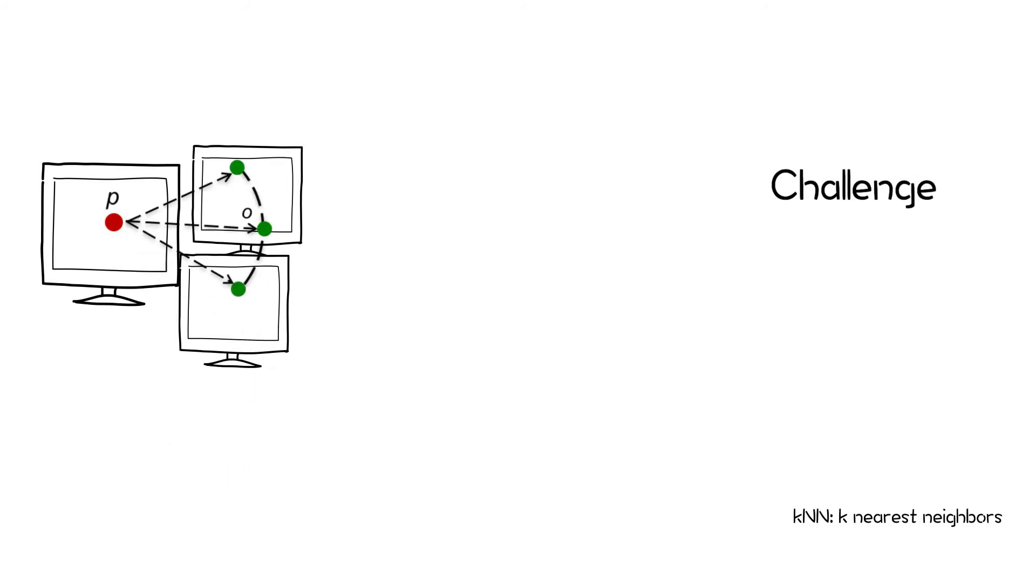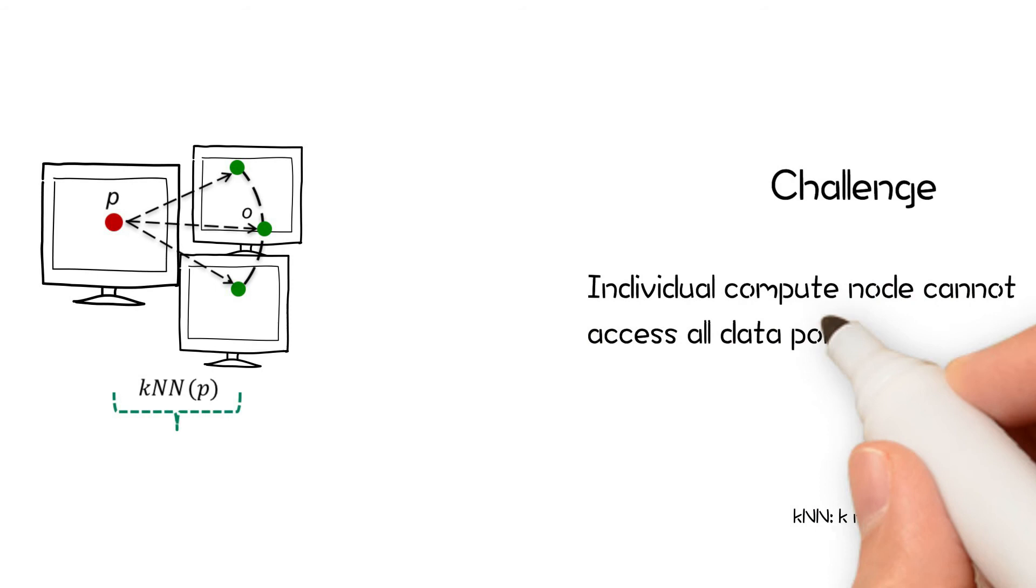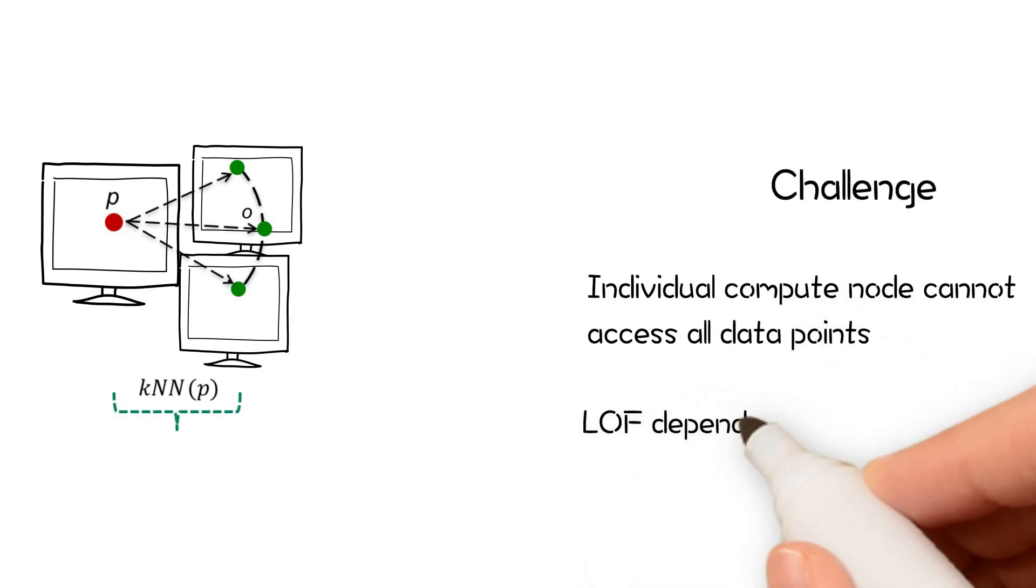However, this is challenging. On distributed compute clusters, individual nodes cannot access all data points. LOF depends on a KNN search over many points in the dataset.